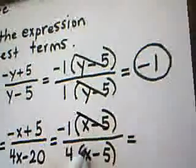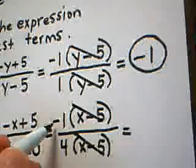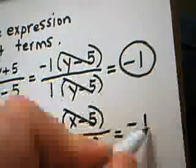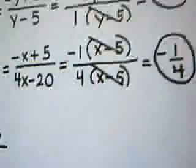The x minus 5's are common factors, so they cancel out of the top and bottom. And you're left with the answer negative 1 fourth, which is my final answer.